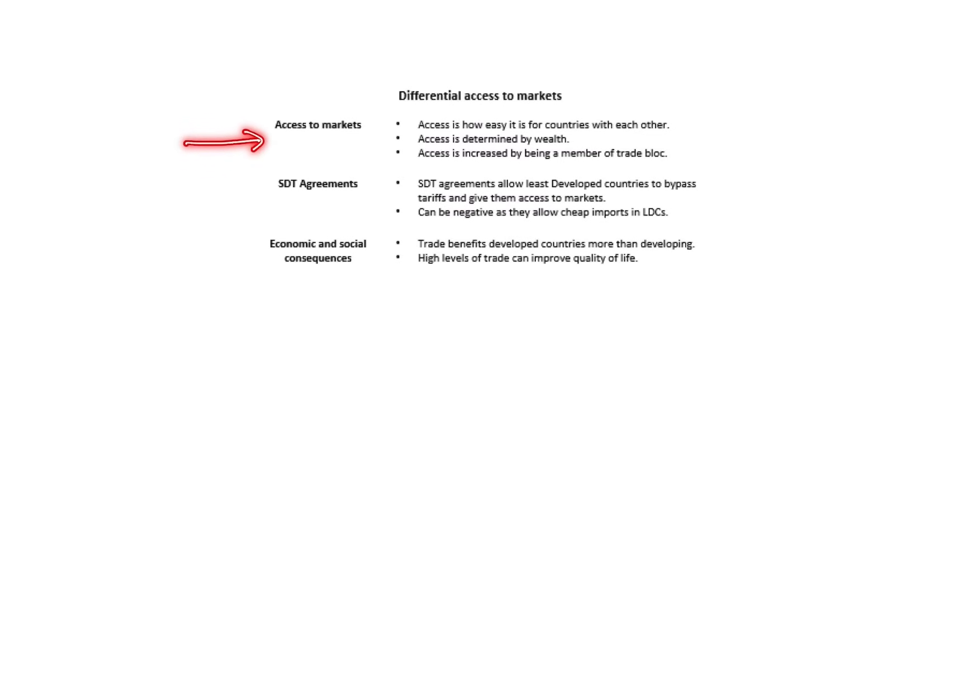This links on to trading relationships. There are three big groups to know: global trade rules, where the WTO creates rules about how countries can trade; trading blocs, which are associations between different governments; and changing trading relationships. Most trade takes place between developed countries, so LICs are mainly trading with HICs or NEEs. This means we have what we call differential access to markets — how easy it is for countries to trade, normally determined by wealth or membership of a trading bloc.